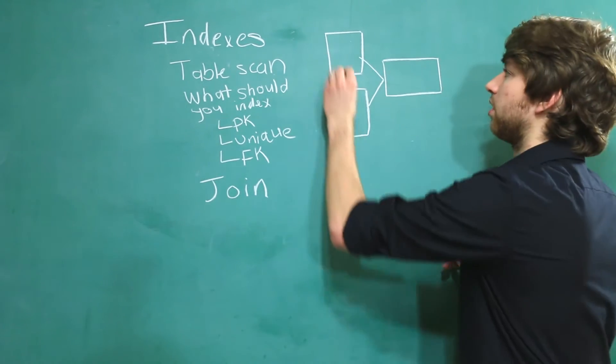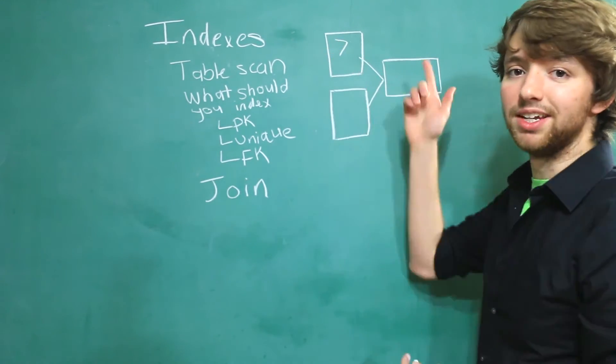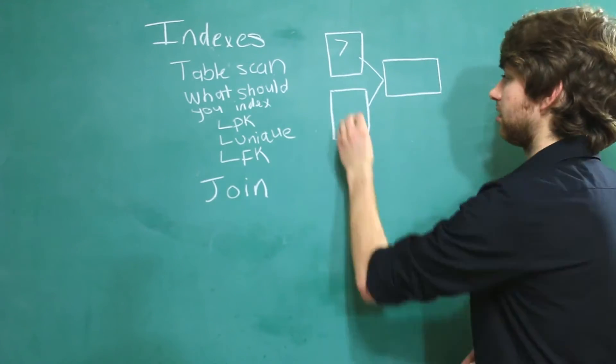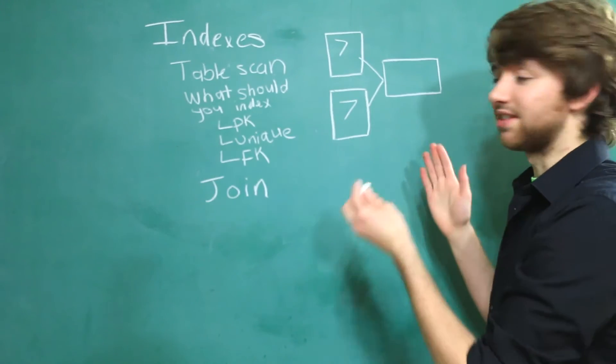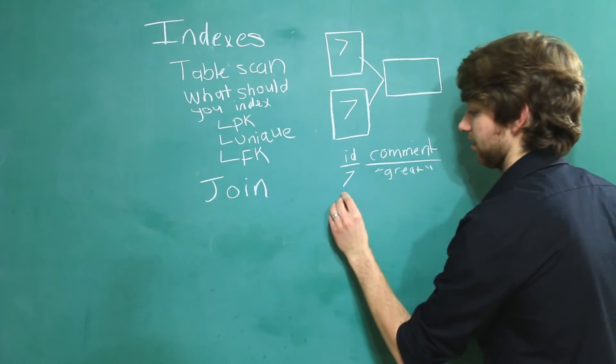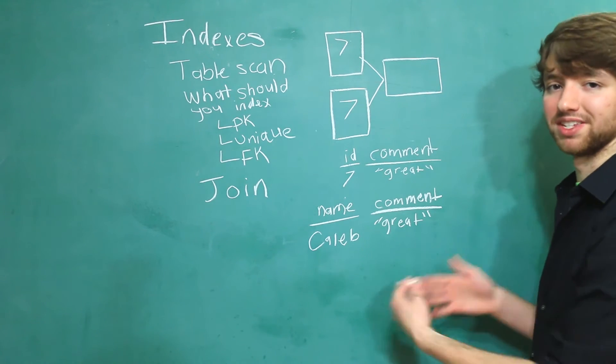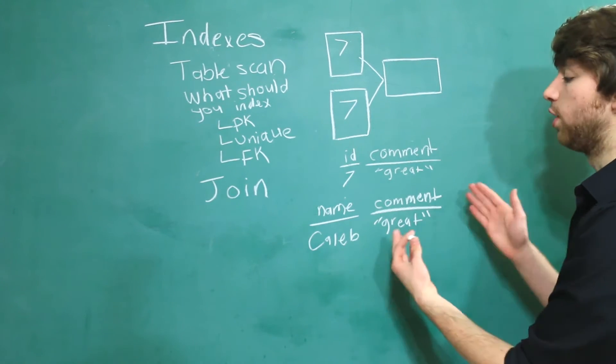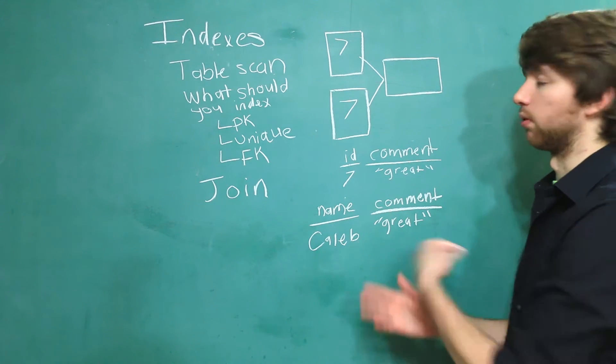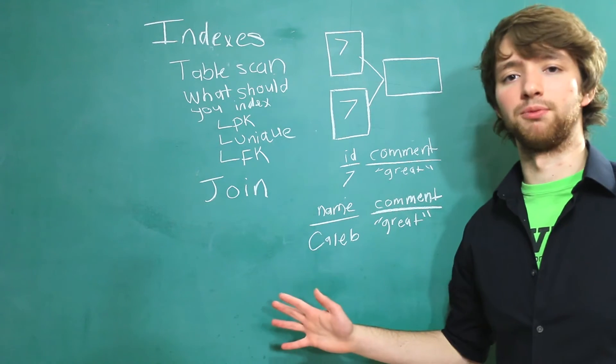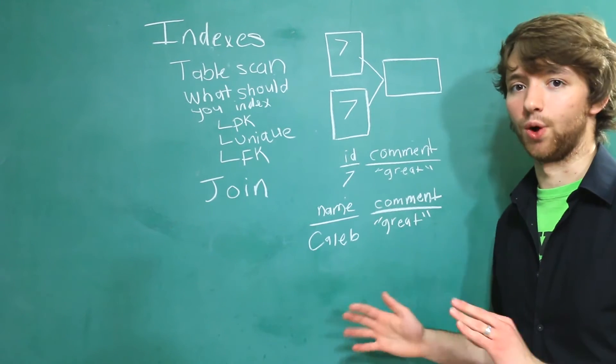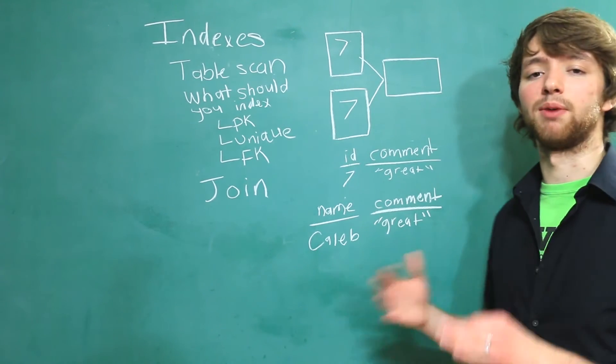So for example, we might have a user up here with the ID of seven, and we might have a comment down here from the user with the ID of seven. Then instead of having this as our table, we can have this. As you can see, this is a much better way to present this data because we know who the comment is from. You could also have a username here or whatever. You can combine things in so many different ways, and you could literally make an entire series on just joins. So that's all we really need to talk about for now.